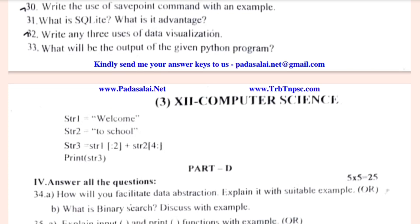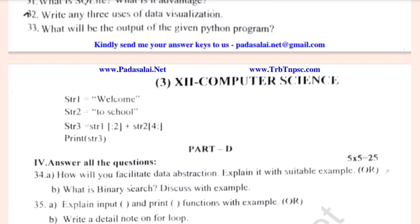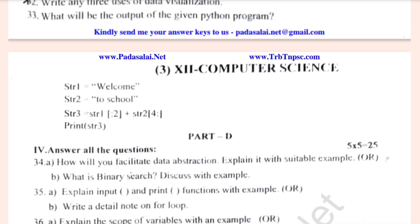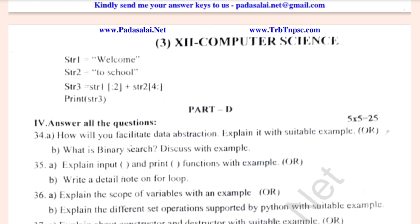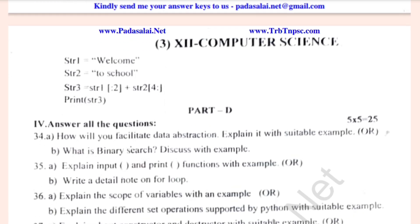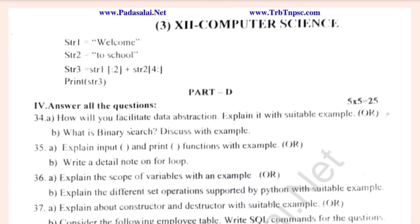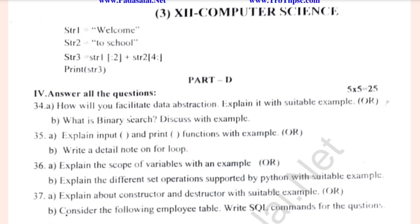Explain input function and print functions with example, or write a detail note on for loop. Thirty-six: Explain the scope of variables with an example, or explain the different set of operations awarded by Python with suitable example. Thirty-seven: Explain about constructor and destructor with suitable example. Consider the following employee table, write SQL comments.